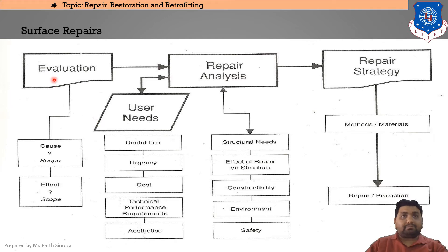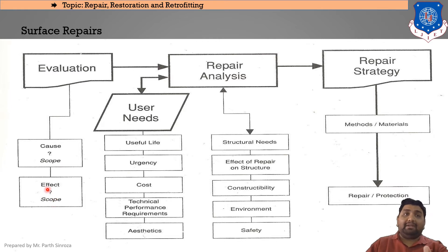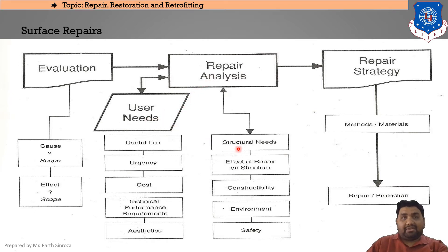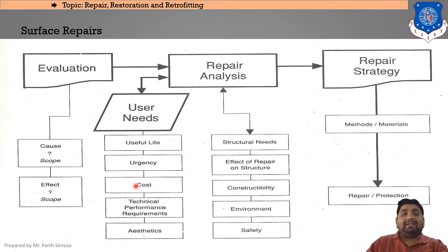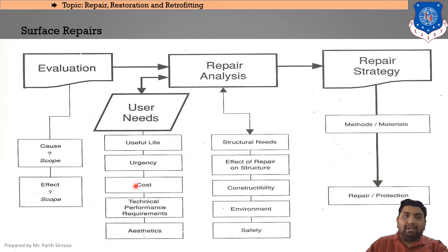The surface repair process flows through a flowchart starting with evaluation: what type of repairs are needed, the cause, scope, and extent of damage. Repair analysis is bifurcated into user needs and structural needs. For user needs, it covers useful life of the structure, urgency of retrofitting, and cost — for example, minor cracks may not justify increasing the original cost of the building.